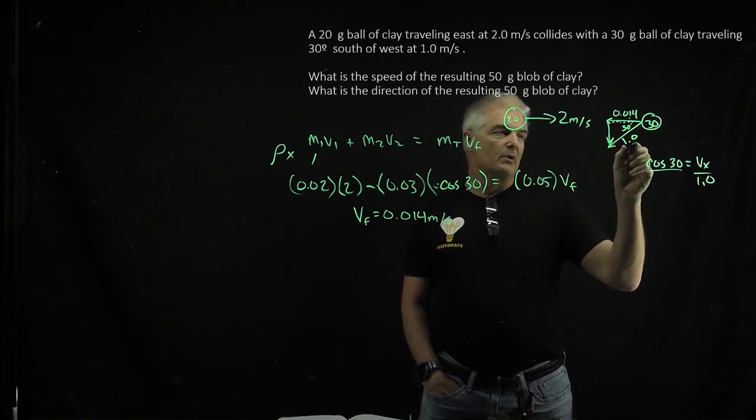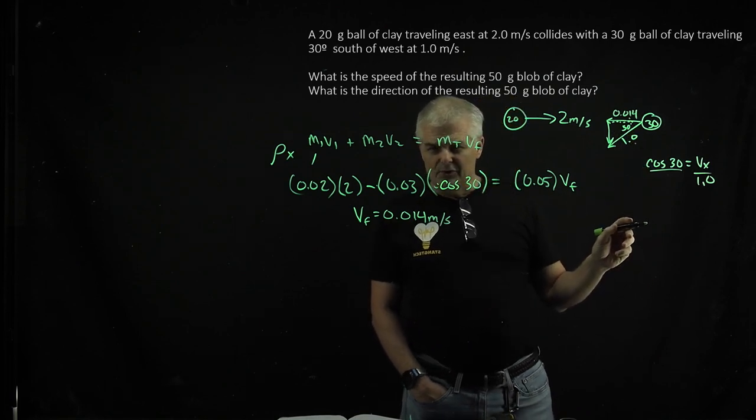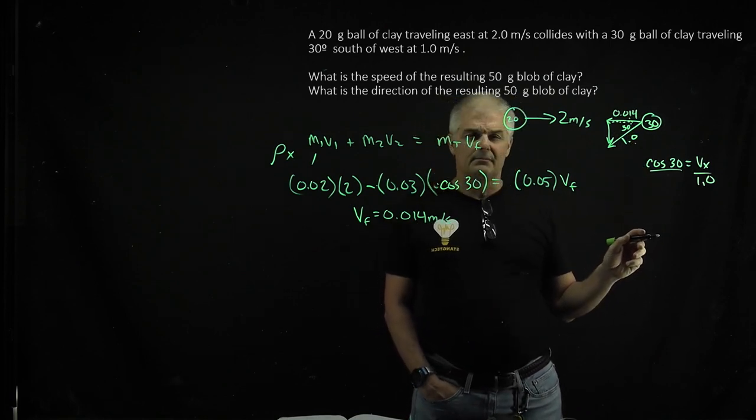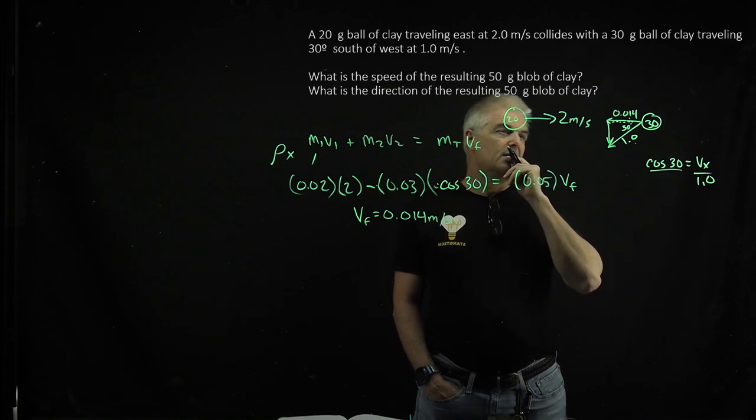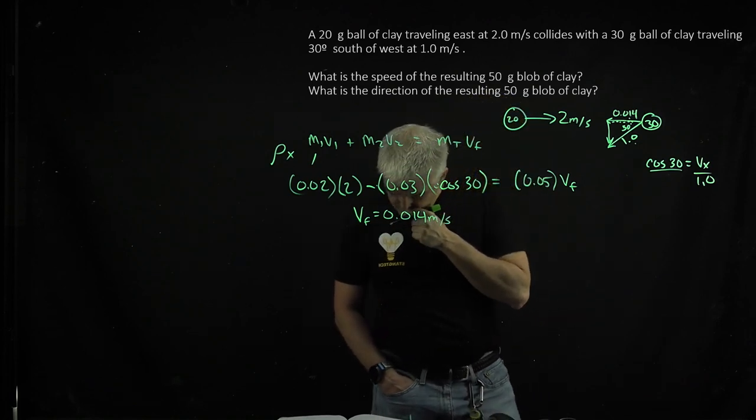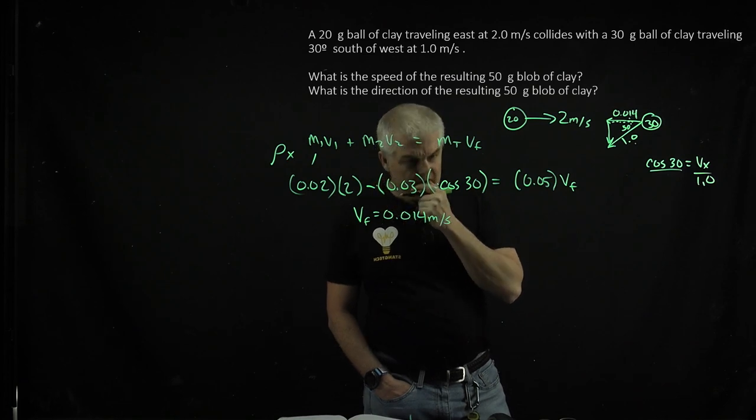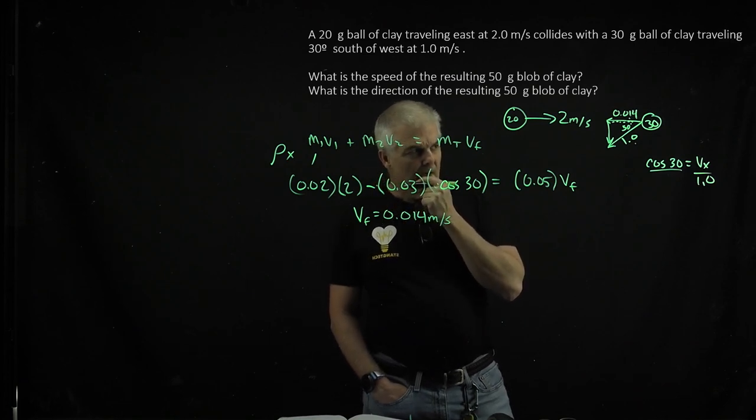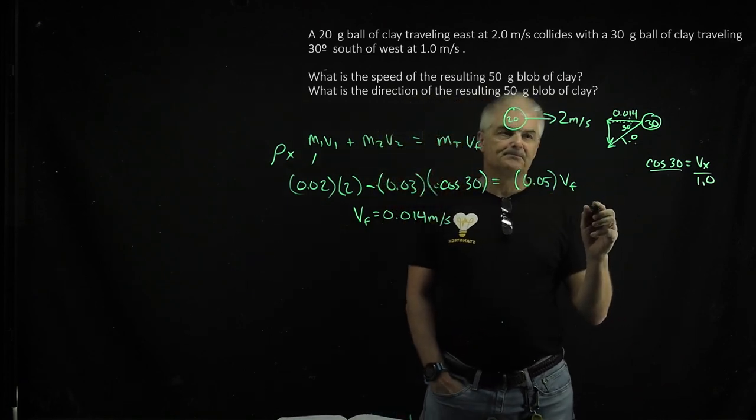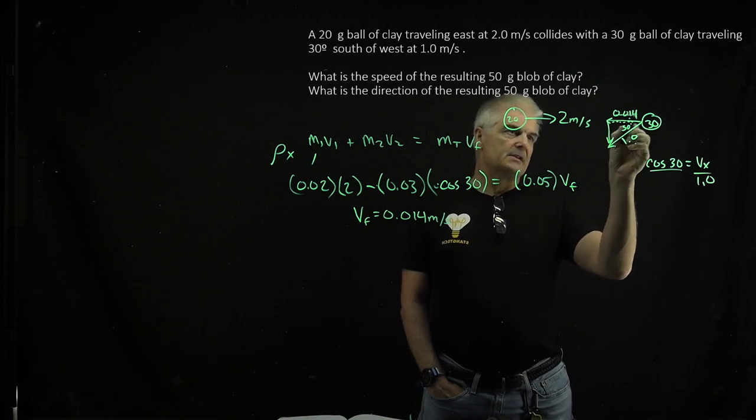If I know that this is 0.014 and this is 1, I could find the direction of the resulting 50-gram ball of clay. Oh, hold on. I'm doing this wrong.